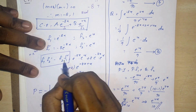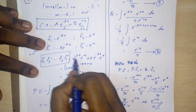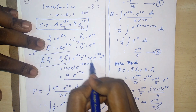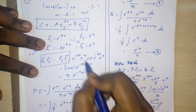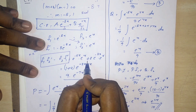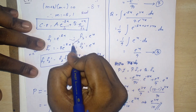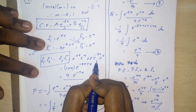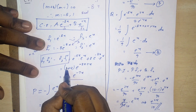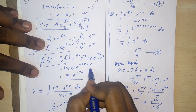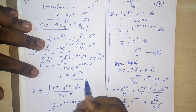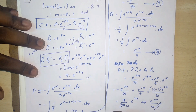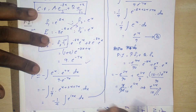The Wronskian denominator is f1·f2' minus f2·f1'. That is e^(-8x)·e^x minus e^x·(-8·e^(-8x)). Combining exponents: e^(-8x+x) = e^(-7x), and 1 + 8 = 9. So the denominator equals 9·e^(-7x).